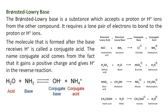The Bronsted-Lowry Base is a substance which accepts a proton or H-plus ions from another compound. It requires a lone pair of electrons to bond to the proton or H-plus ions. The molecule formed after the base receives H-plus is called a conjugate acid. The name conjugate acid comes from the fact that it gains a positive charge and gives a proton in the reverse reaction.